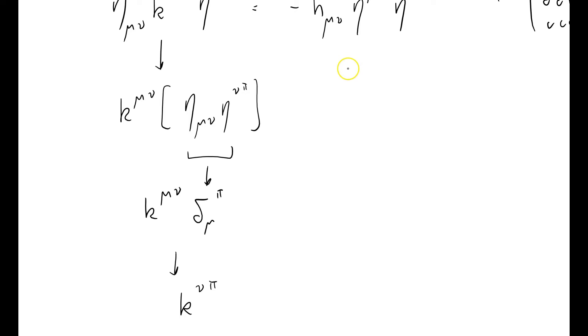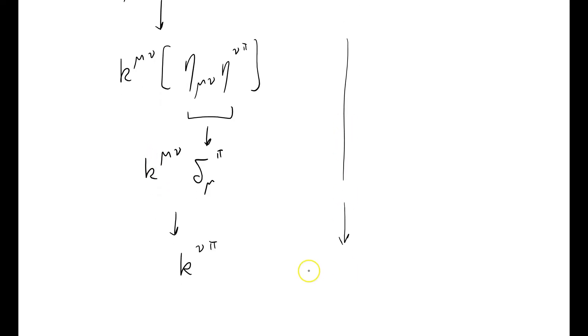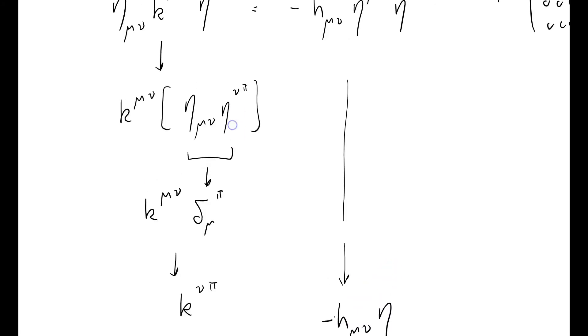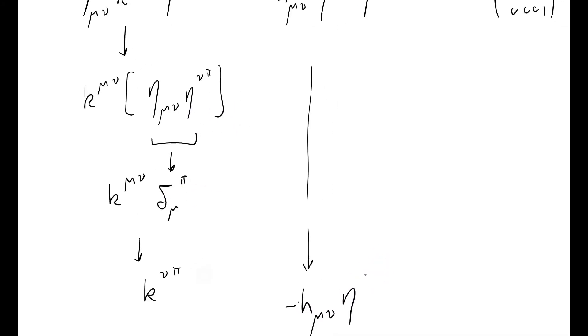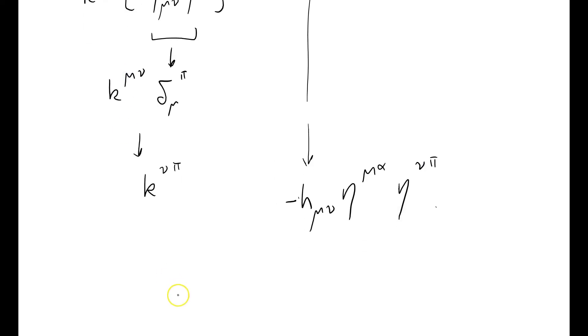What does the right-hand side equal? Well, I'm not going to do anything at all to that. I'm just going to assert that that equals minus H mu nu eta, I'm just copying from here. What symbols have I got? Mu alpha and another Minkowski metric, nu pi. So that tells me that K mu pi equals minus H mu nu eta mu alpha eta nu pi.